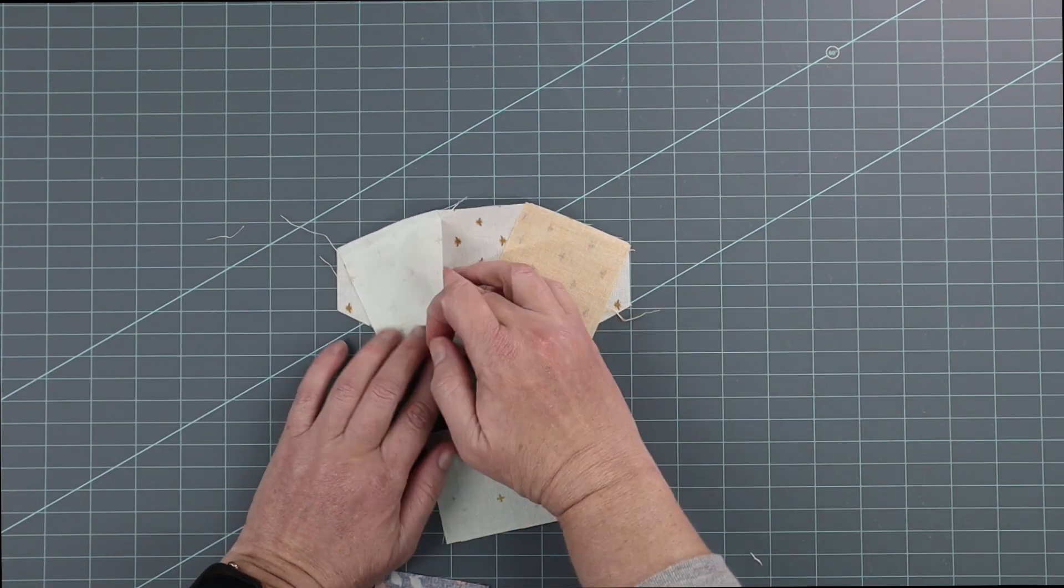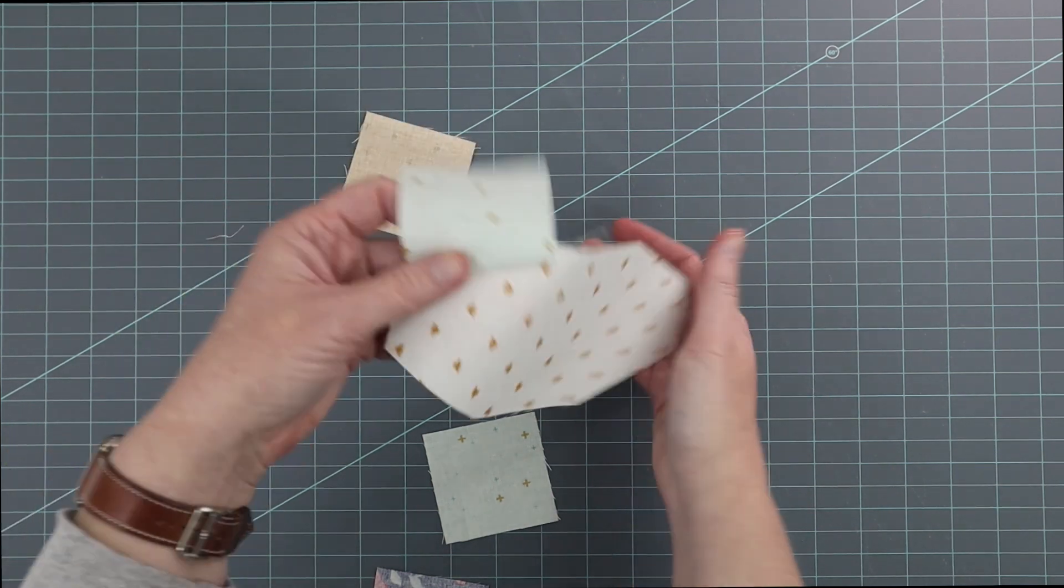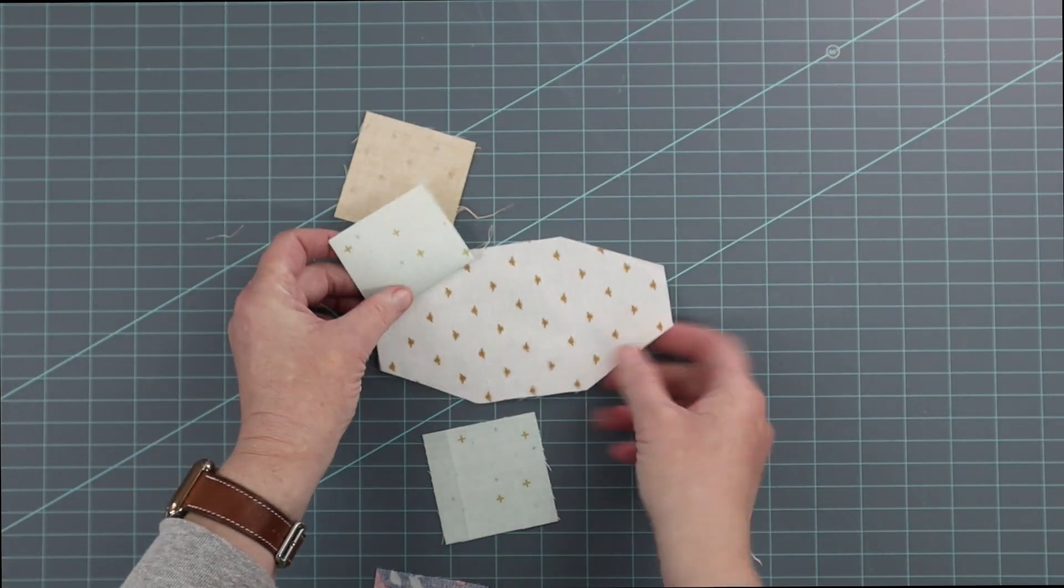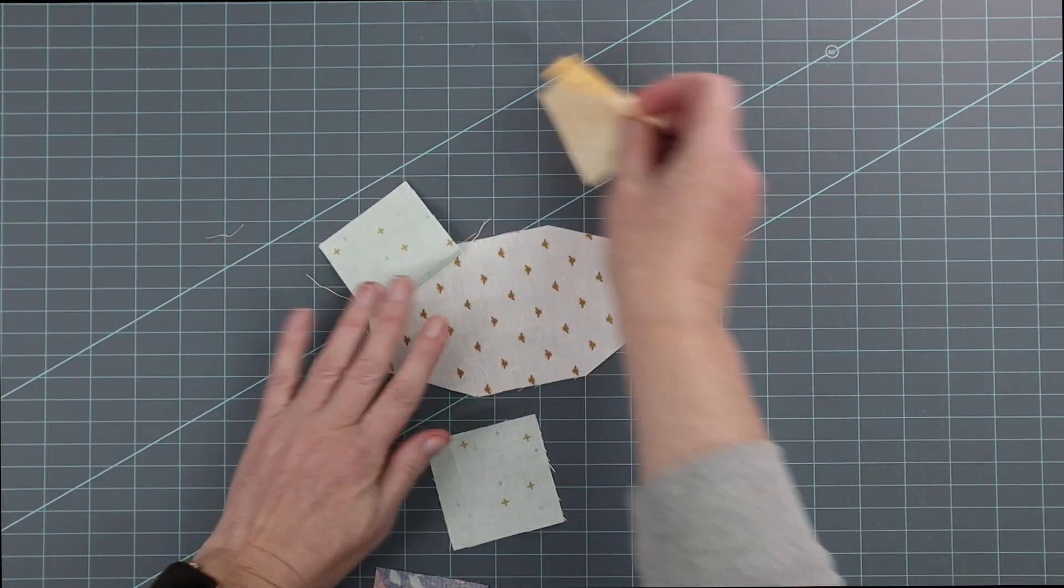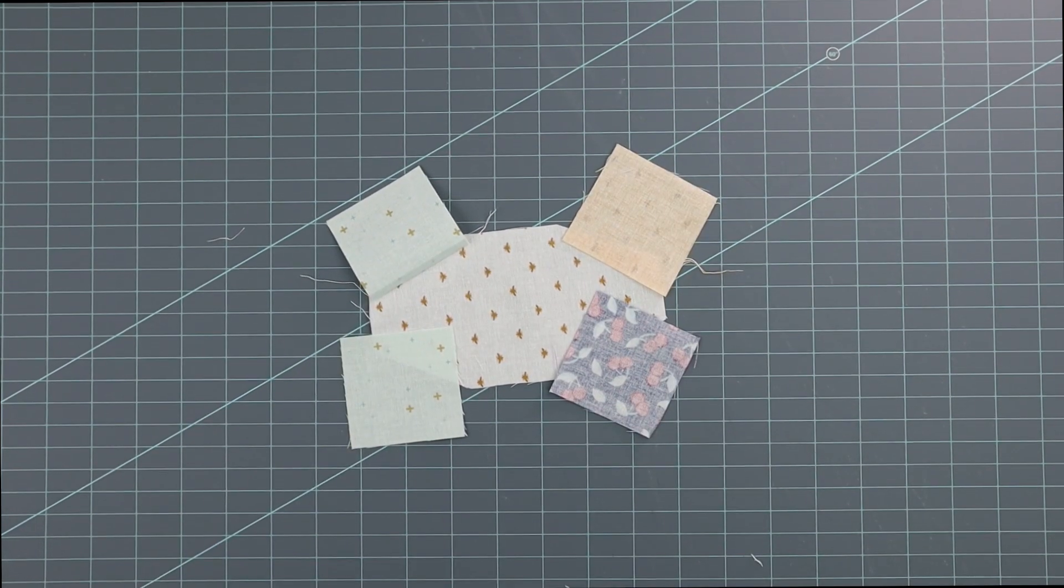This one I have already done so you can see what that looks like, and you need to do that for all four pieces of fabric on your wing sections.